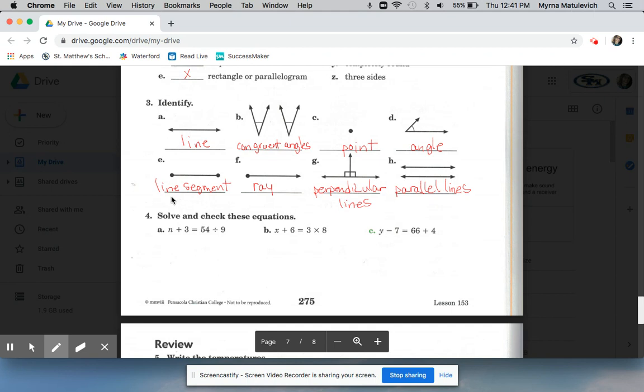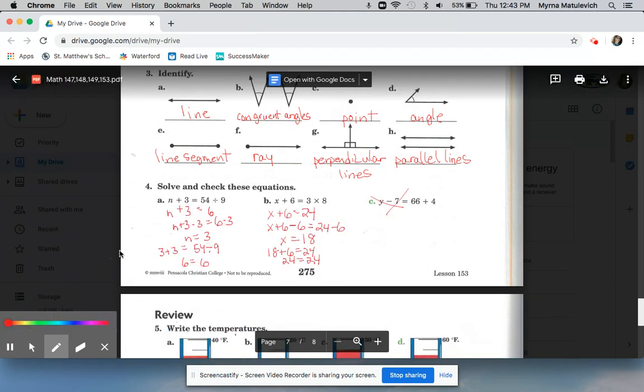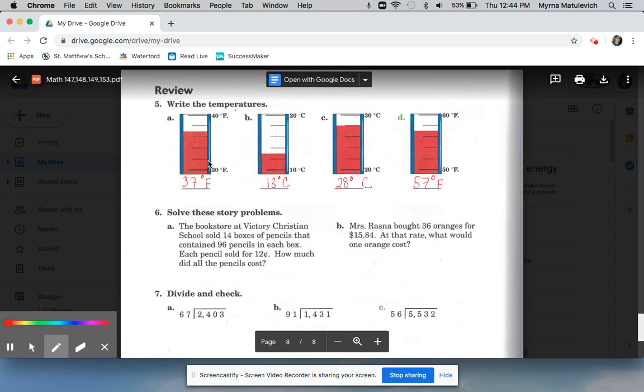You can use yesterday's math to help you solve and check these equations, and this is what you should have gotten. For number four, n equals 3 and x equals 18. And check, don't forget your steps. Write the temperatures. Remember, each segment is two degrees, so this is what you should have gotten: Fahrenheit, Celsius, Celsius, Fahrenheit.